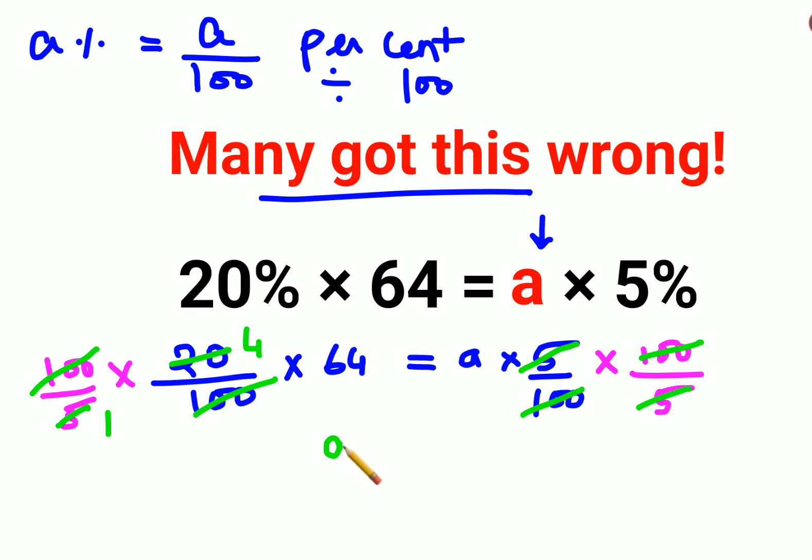So basically we get the value of A which is 64 × 4. That gets you the answer as 256.